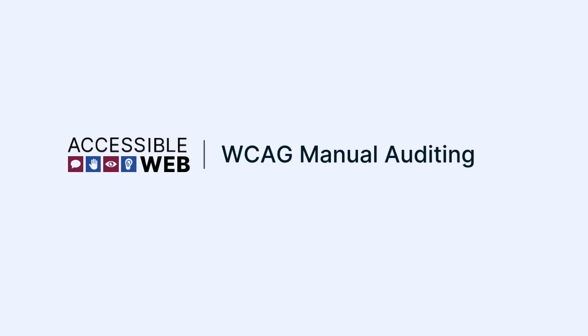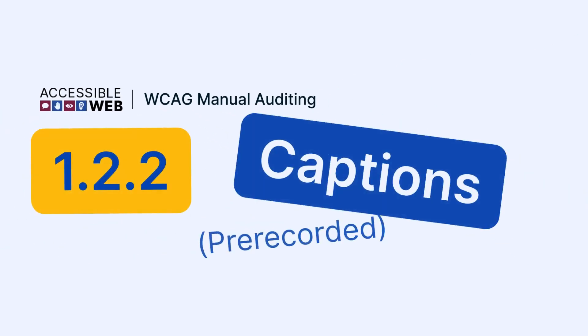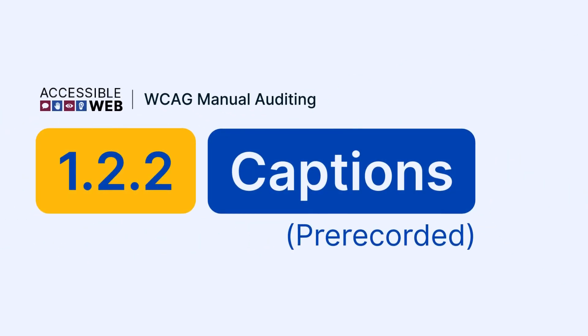Accessible Web — WCAG Manual Auditing. Success Criterion 1.2.2: Captions Prerecorded. In this video, we'll show you how to run automated checks and walk through how to manually test video content for caption accessibility. Let's jump in.